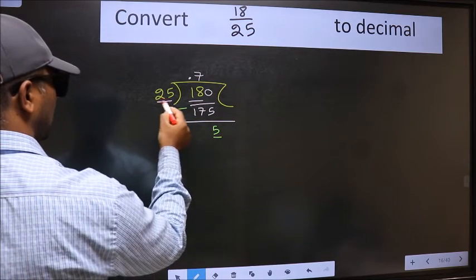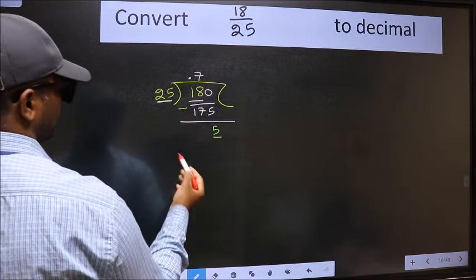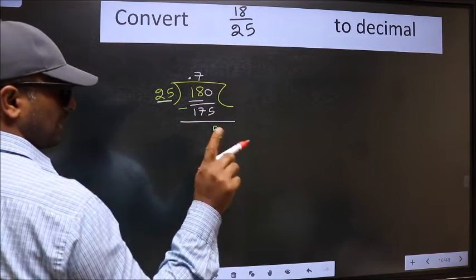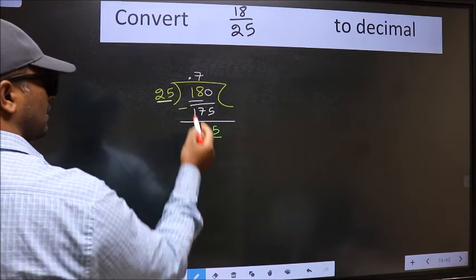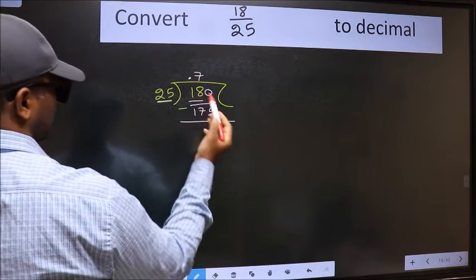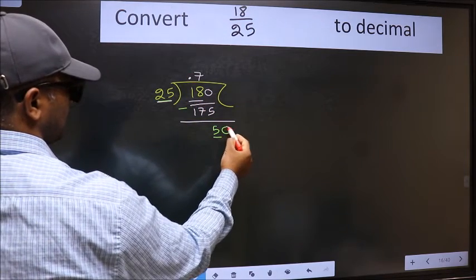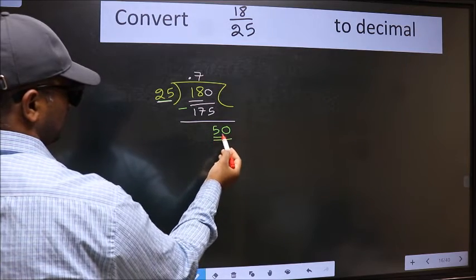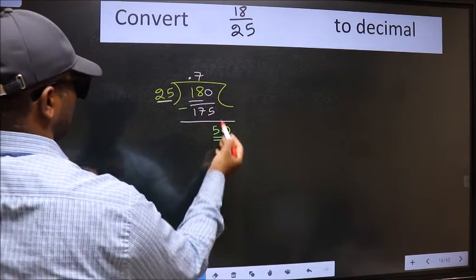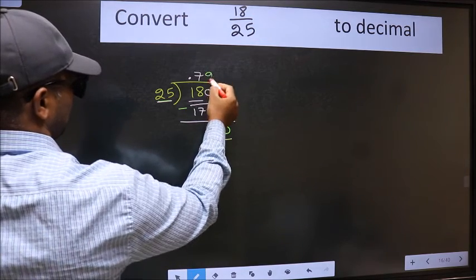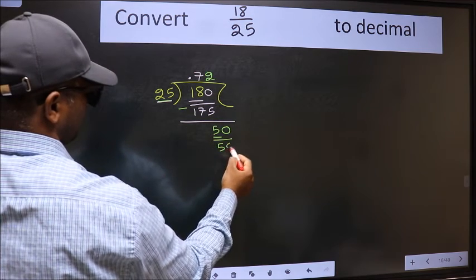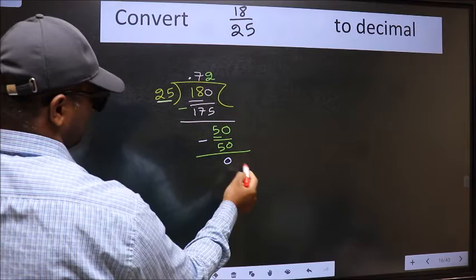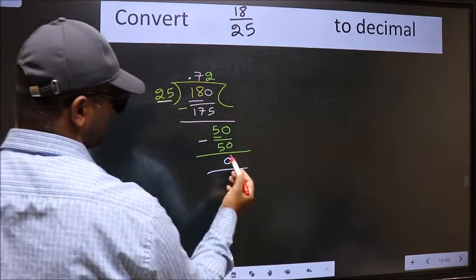Now here we have 5 and here 25. 5 is smaller than 25, and we already have the decimal, so this time we can directly take 0. So 50. When do we get 50 in the 25 table? 25 twos are 50. Now we should subtract — we get 0.